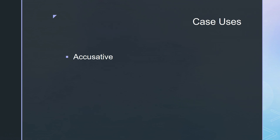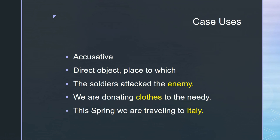The accusative case — another very important one. We'll see the nominative and accusative the most this year. It is the direct object, and it can also be place to which. Direct objects are pretty easy — it's whatever is receiving the action of the verb. 'The soldiers attacked the enemy' — the enemy are being attacked, they're getting the action. 'We are donating clothes to the needy' — the clothes are the direct object, where the needy were the indirect object. Notice that the direct object becomes the subject of a passive sentence; in Latin that would mean it needs to be nominative. If you're using a passive verb, you cannot have a direct object.